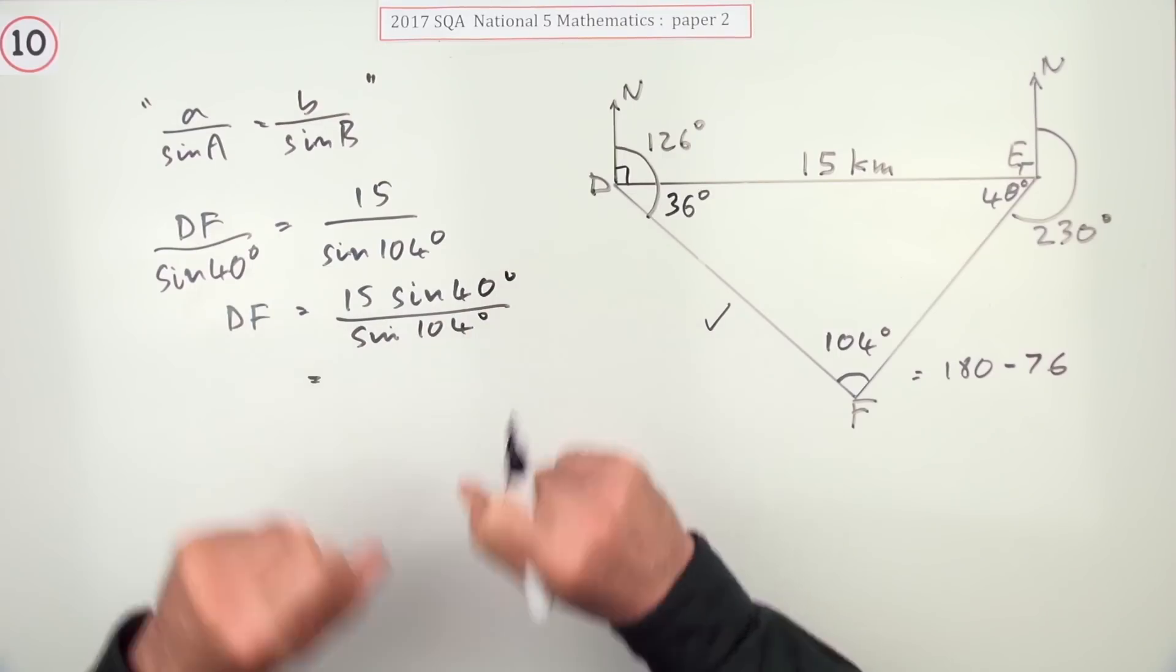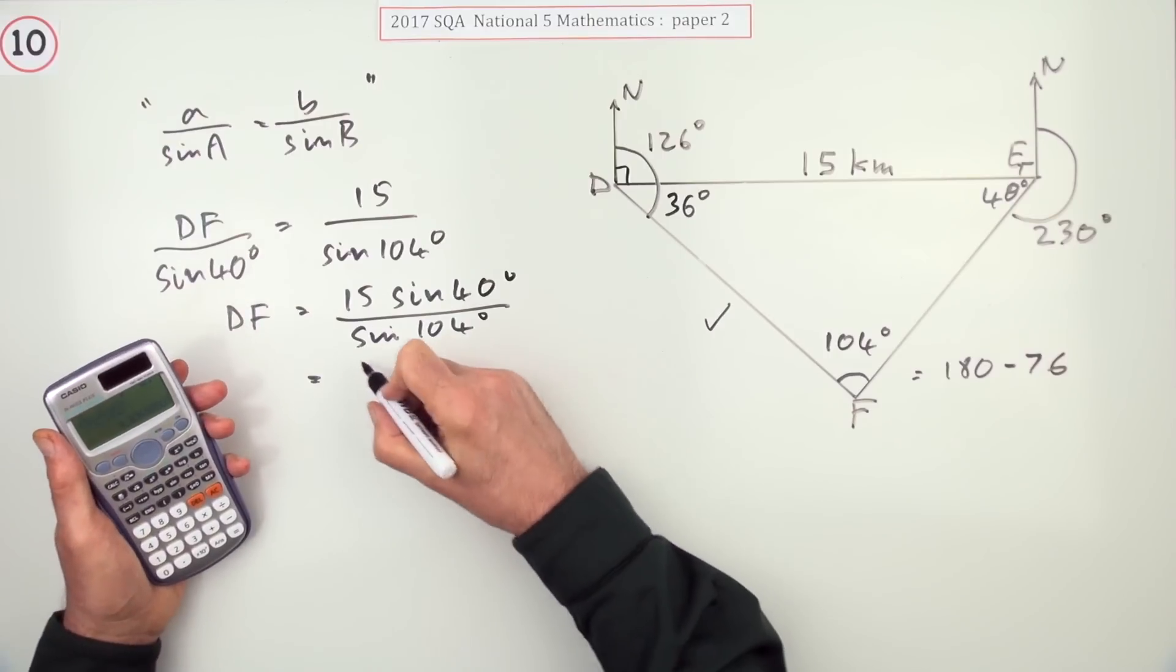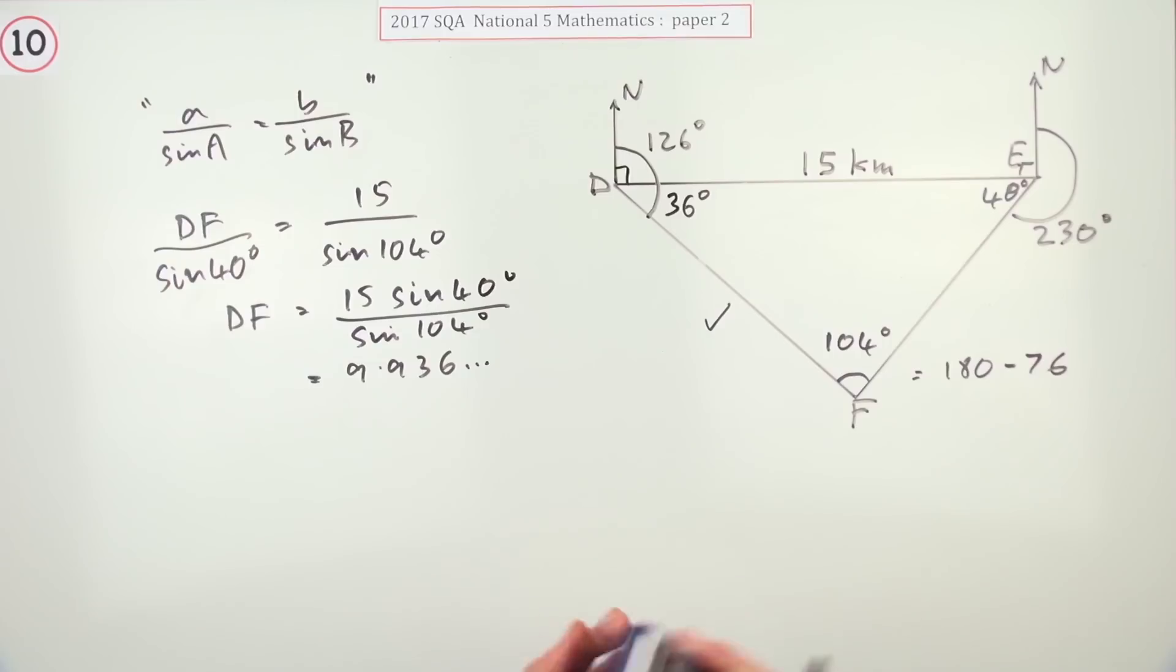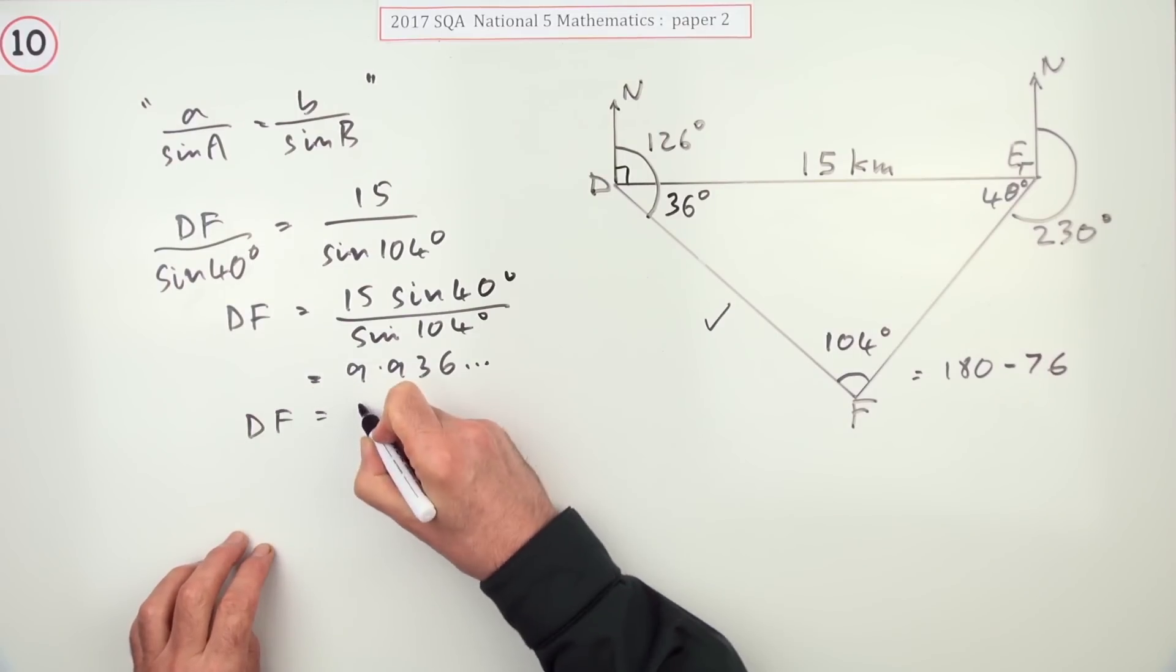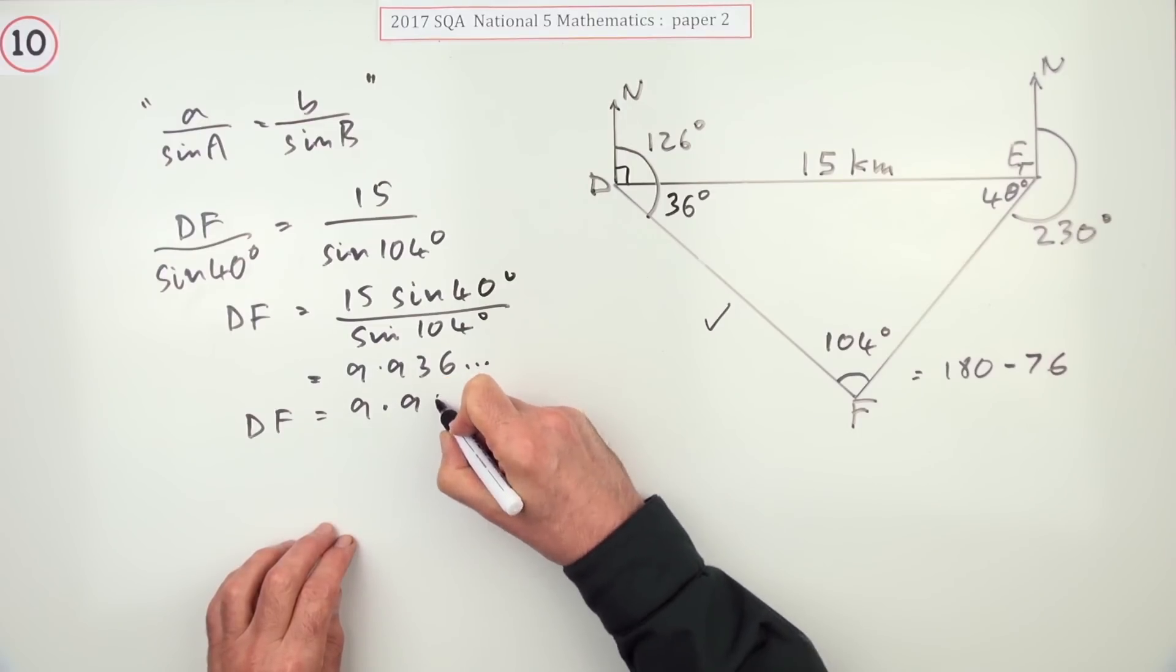Now it's just press the buttons. And when you press the buttons, you get 9.936 and so on. So just calling the distance DF. So I'll say DF is 9.9 kilometers.